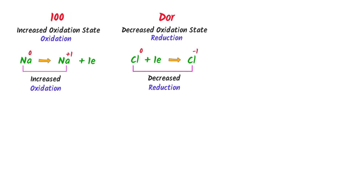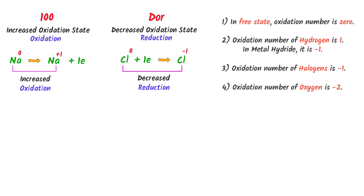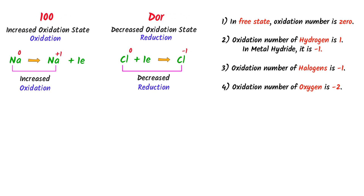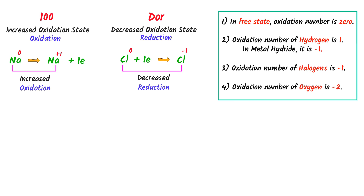Now I will use four rules to instantly calculate oxidation state and easily recognize redox reactions. We have already discussed these four rules in our previous video — the link is given in the description.